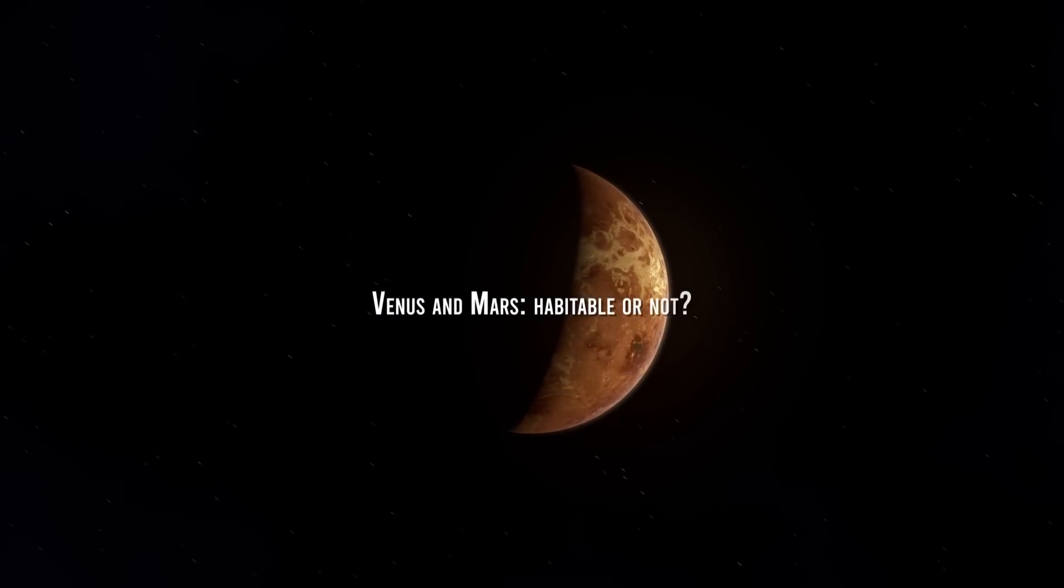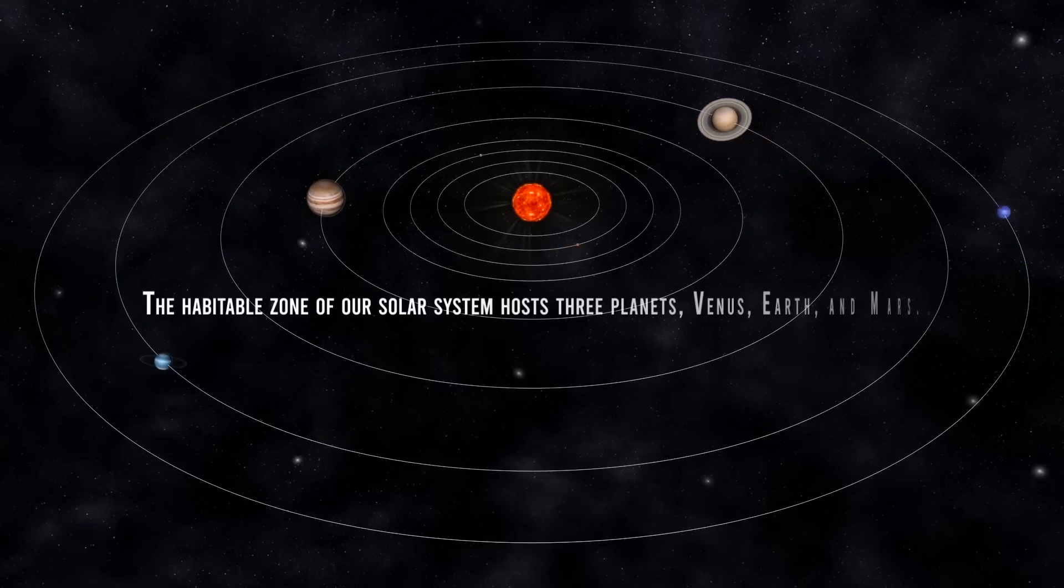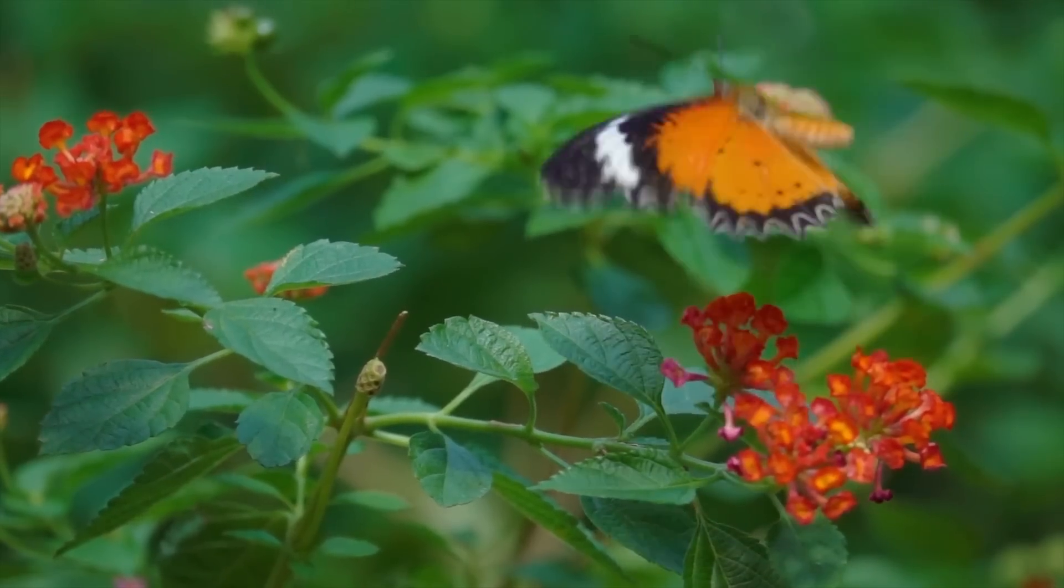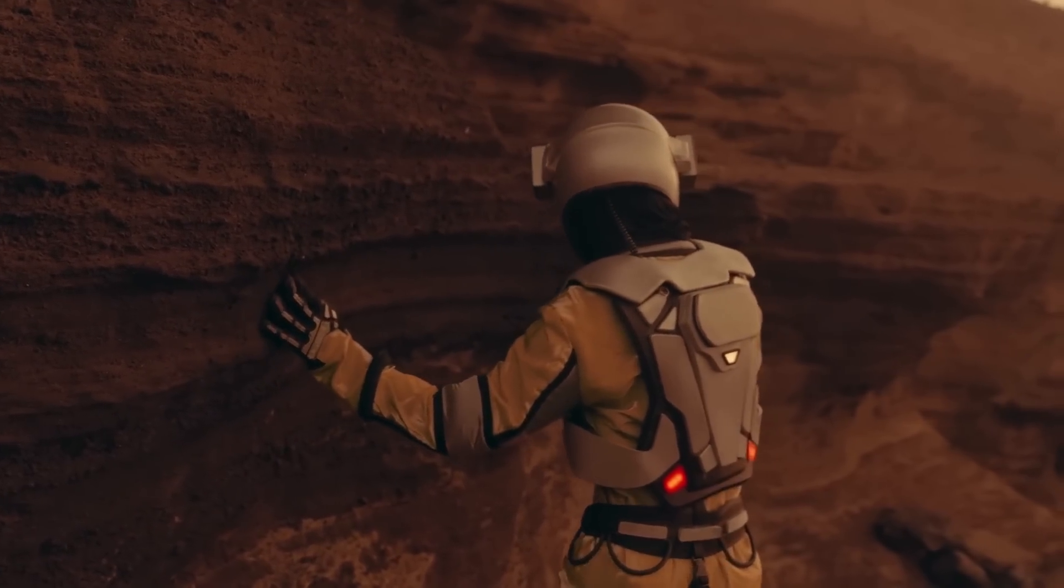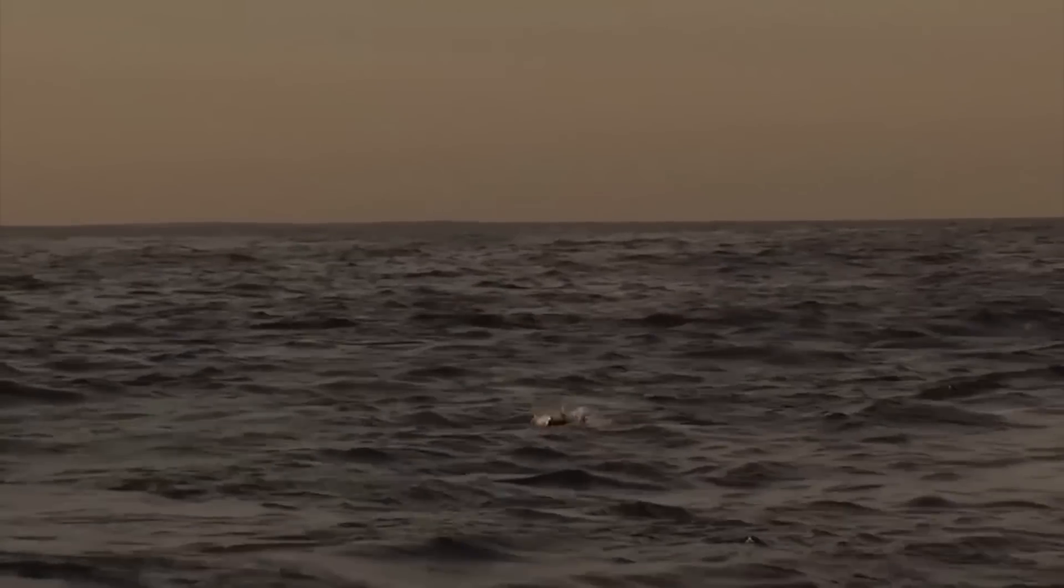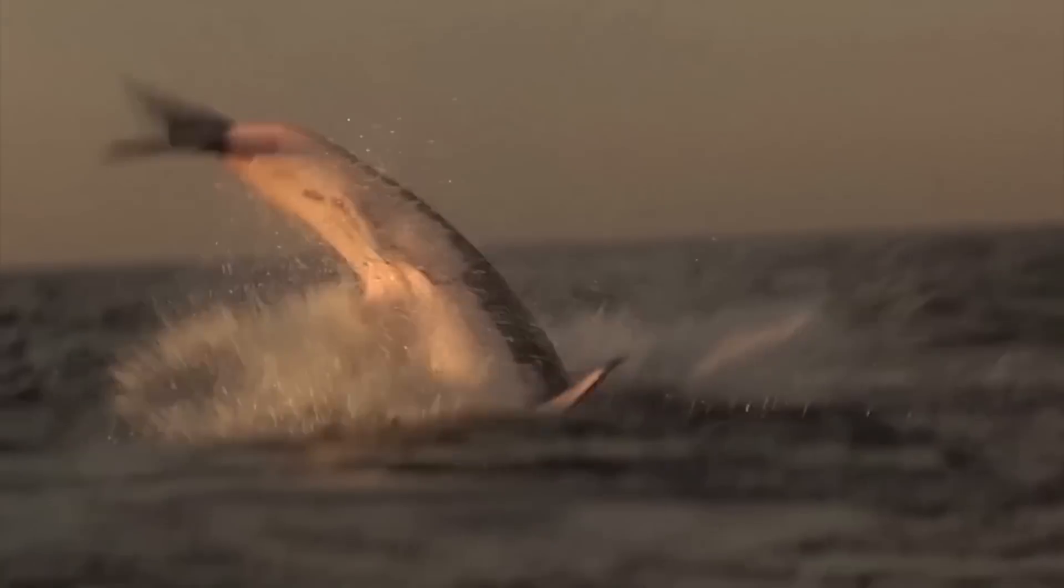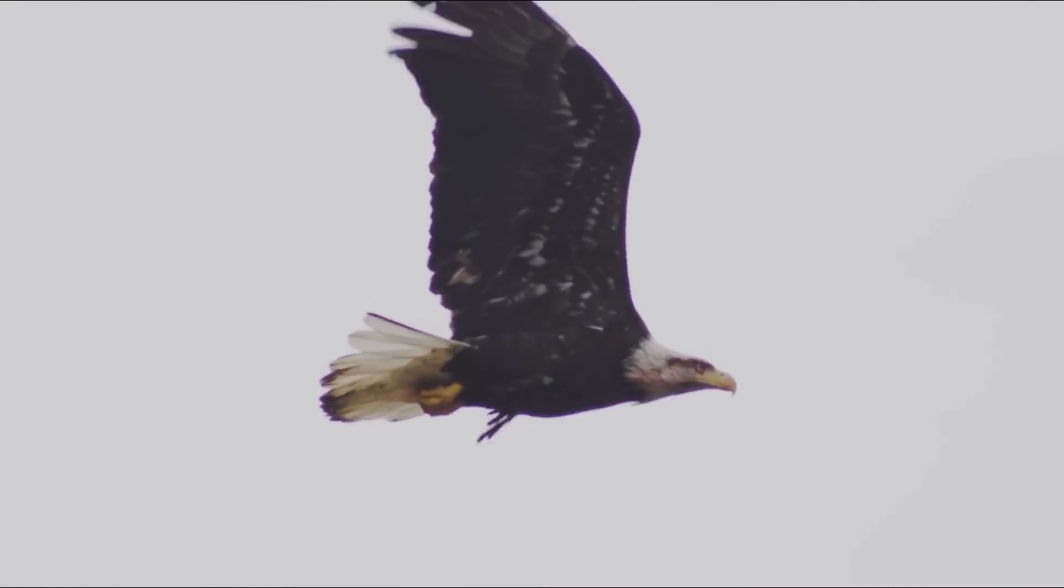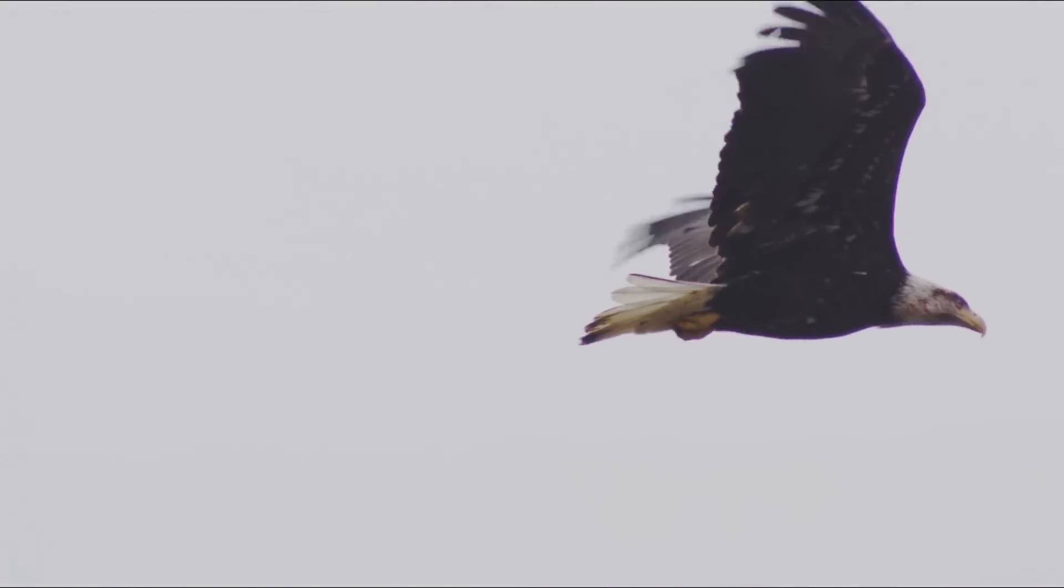Venus and Mars, habitable or not? As we have already seen, the habitable zone of our solar system hosts three planets: Venus, Earth, and Mars. However, of those three, only Earth has life. Not only that, but Venus and Mars are a long way from habitable planets. This is because it is not enough to be within the habitable zone to host living beings. Several factors can determine whether a planet will be habitable or not, regardless of whether it is in the habitable zone.